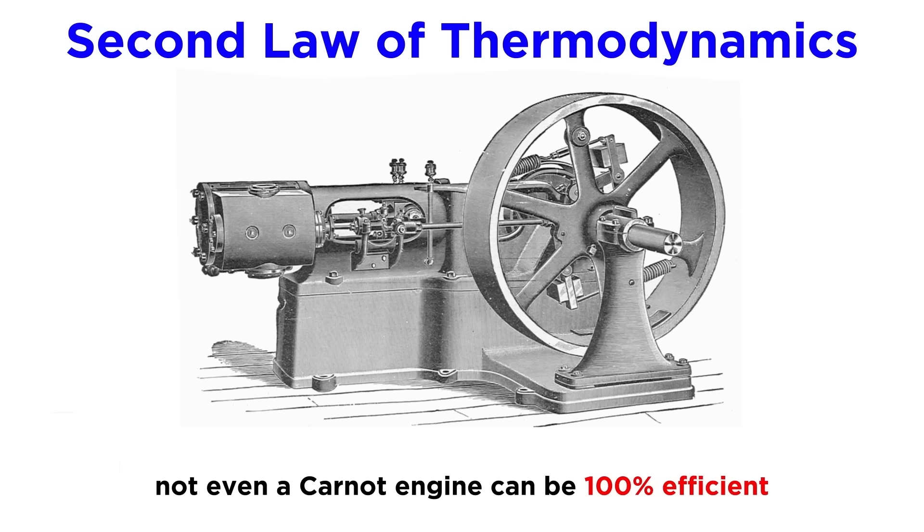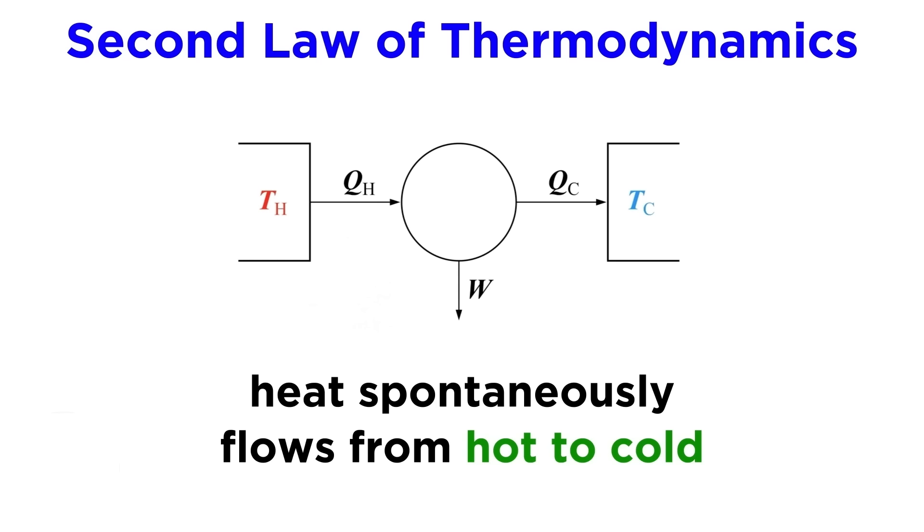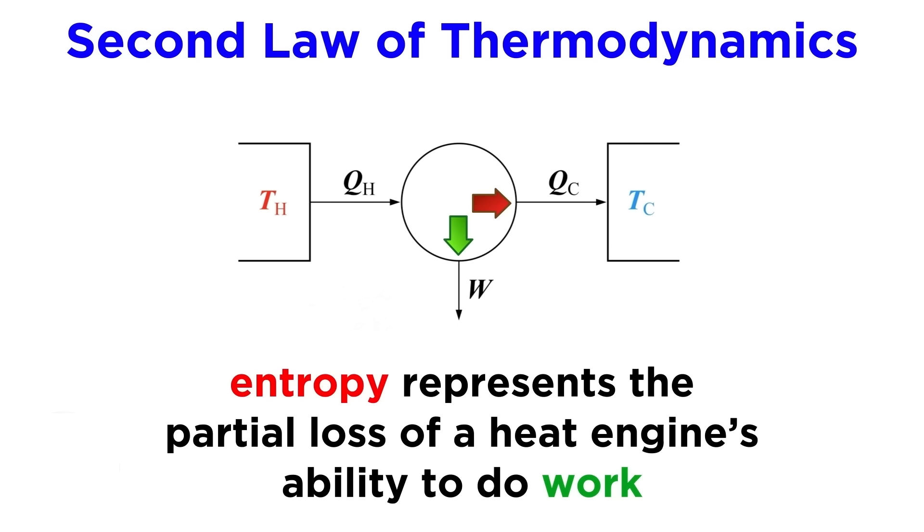Not even a hypothetical perfect heat engine called a Carnot engine. To paraphrase the physics for our general purposes, we came to understand that heat spontaneously flows from regions of high temperature to regions of low temperature, and not the other way around. This is what led to the concept of entropy.